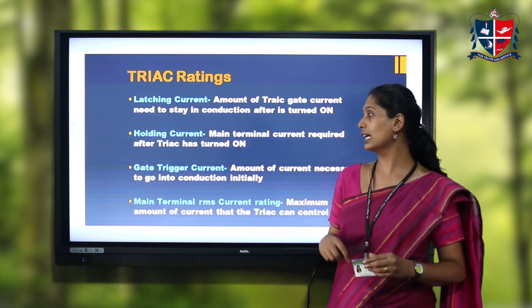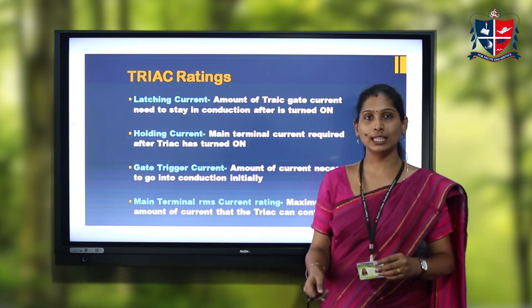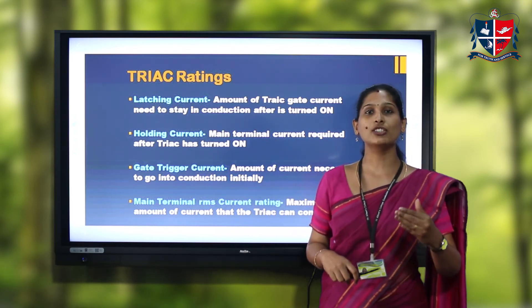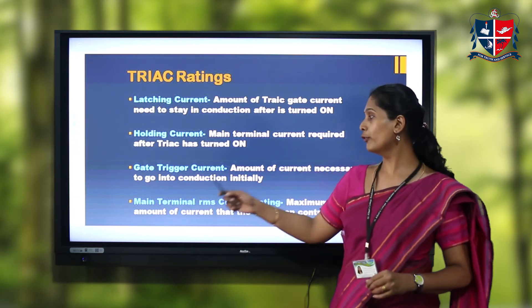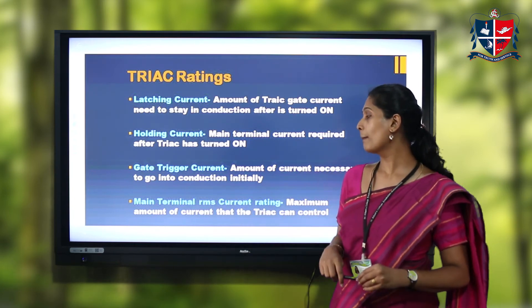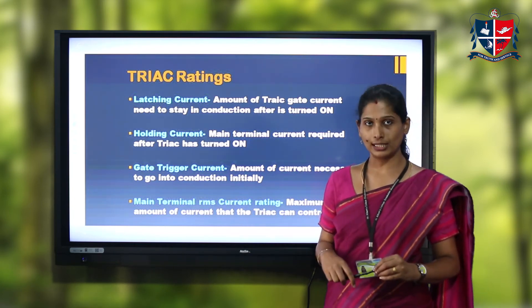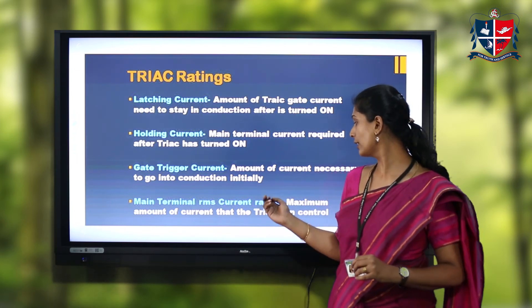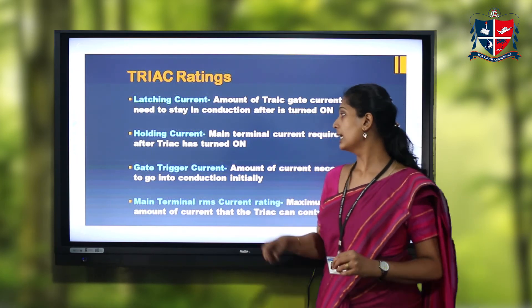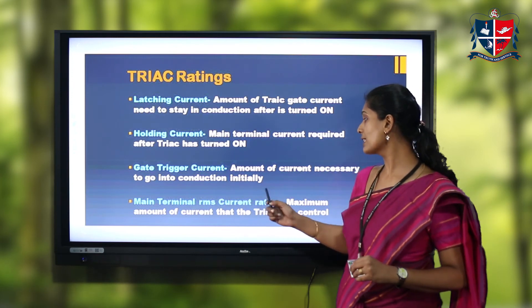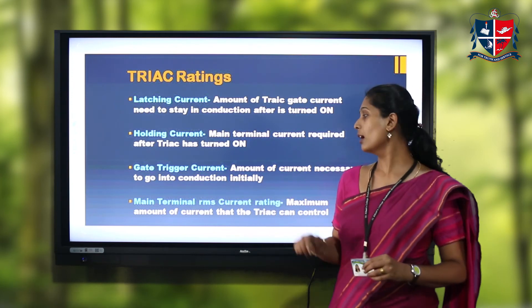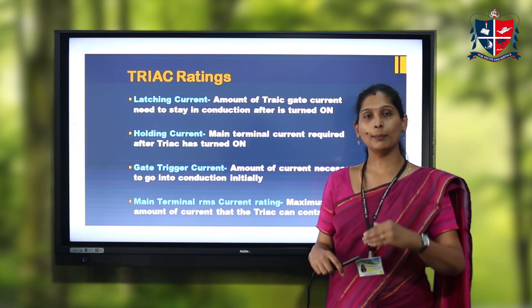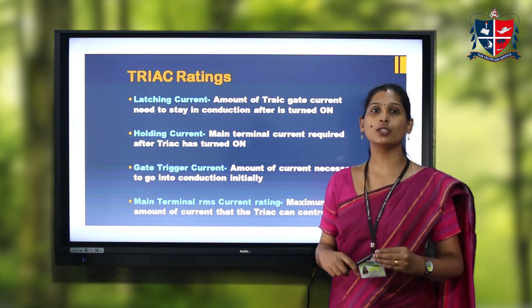The third parameter is gate trigger current — the current applied to the gate terminal that causes the TRIAC to go into conduction initially. The fourth is the main terminal RMS current rating, which is the maximum amount of current that a TRIAC can withstand. Above this rating value, the device will get damaged.